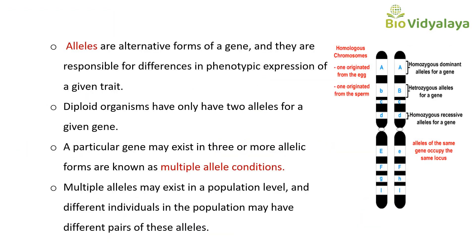We already studied about alleles. Alleles are alternative forms of a gene and they are responsible for difference in phenotypic expression of a given trait or a given character. For example, the height of a plant may be tall or dwarf. The allele responsible for tall character is capital T and small t is coding for dwarf character. Capital T is the dominant allele and small t is the recessive allele.